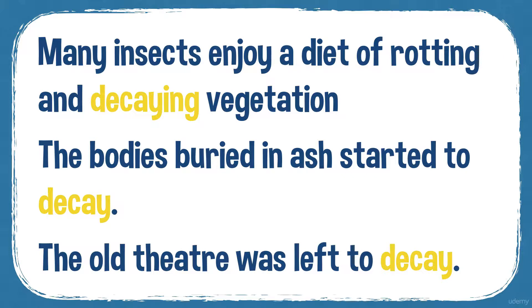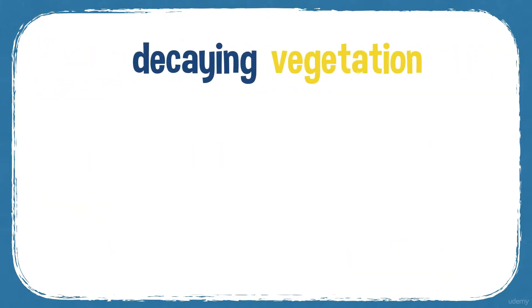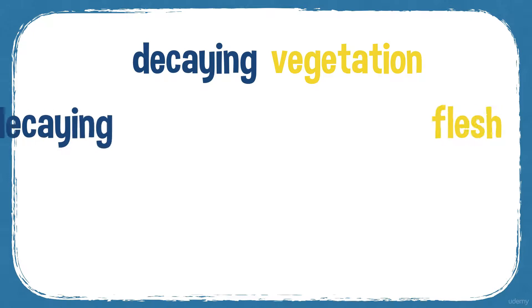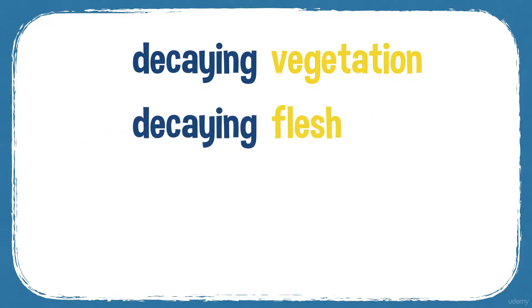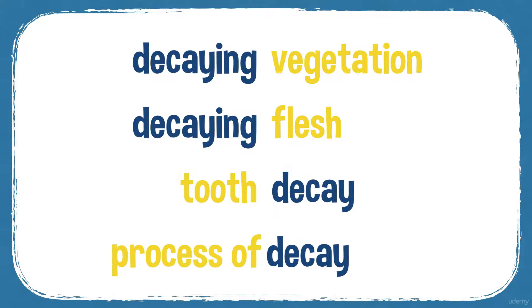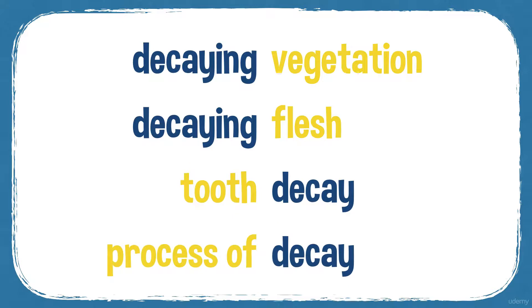Buildings, towns, even economies can decay if they're just left, never repaired, never fixed — they slowly decay. The difference between rotting and decaying: rotting suggests a bad smell as well as breaking down, while decay suggests something that's very slow. Common collocations: decaying vegetation, decaying flesh, tooth decay, and a process of decay.